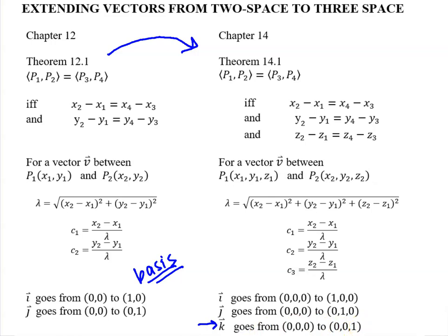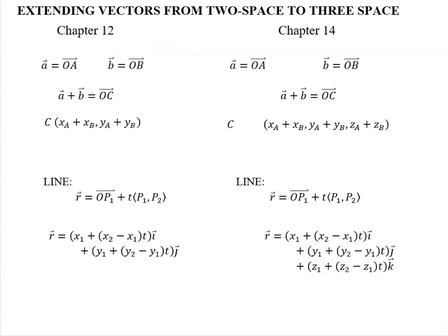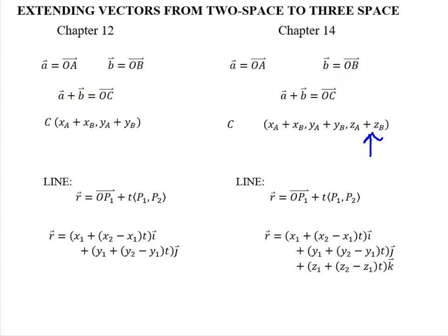We have a couple of other straight extensions. In Chapter 12, if we wrote vector A, that was the vector from the origin out to point A, and same for B. If I wanted to add them together, I could find the new vector C by adding the x components from A and B and adding the y components. In three-space it's the same thing — you just now have a z component as well.